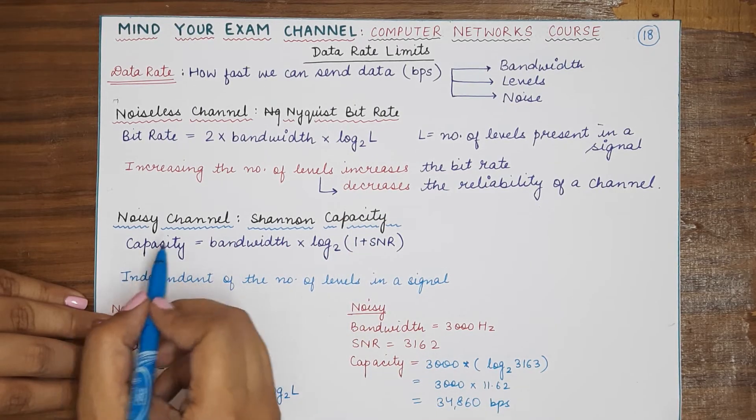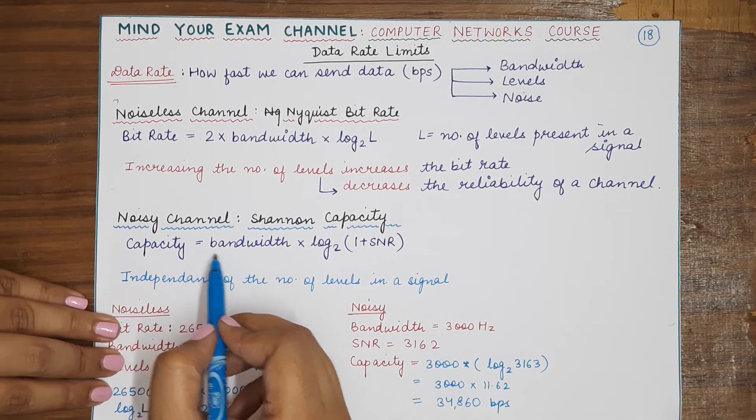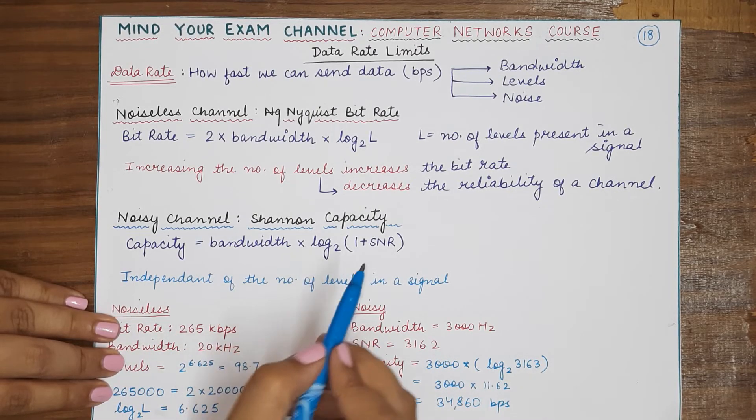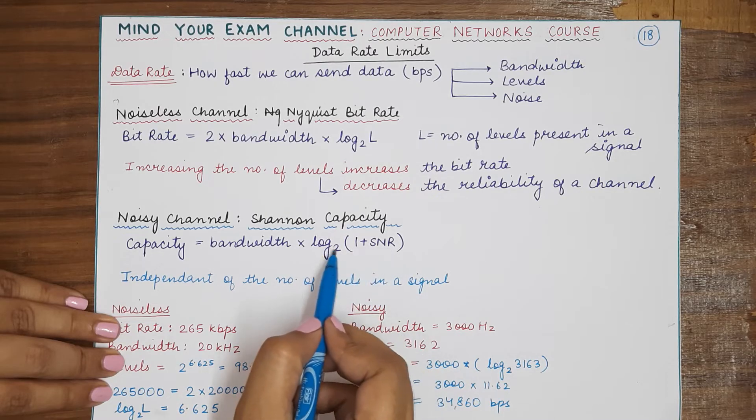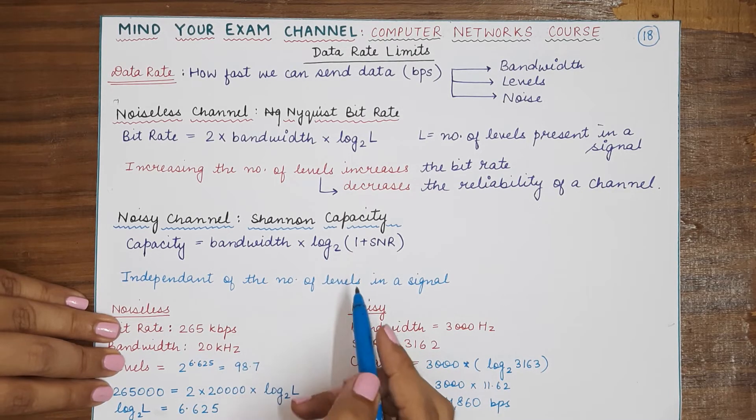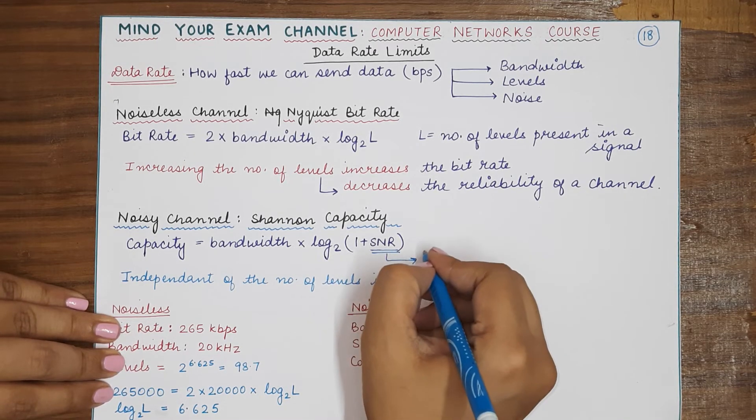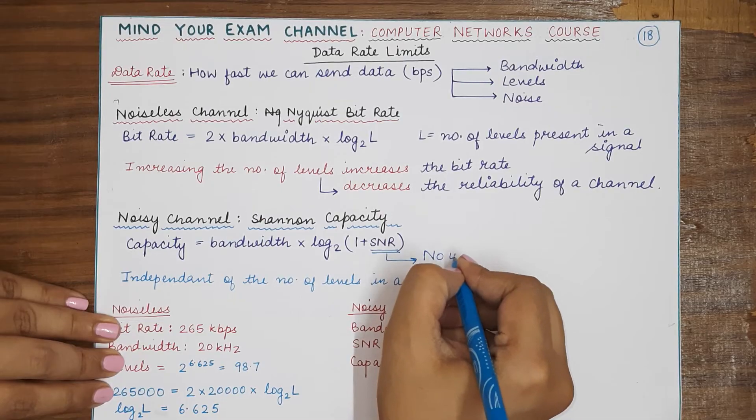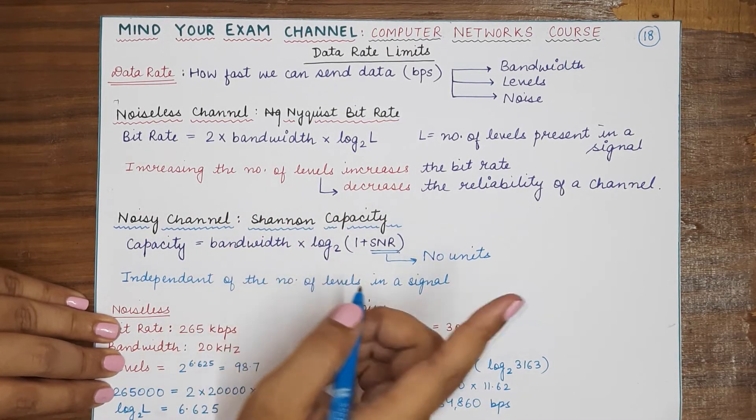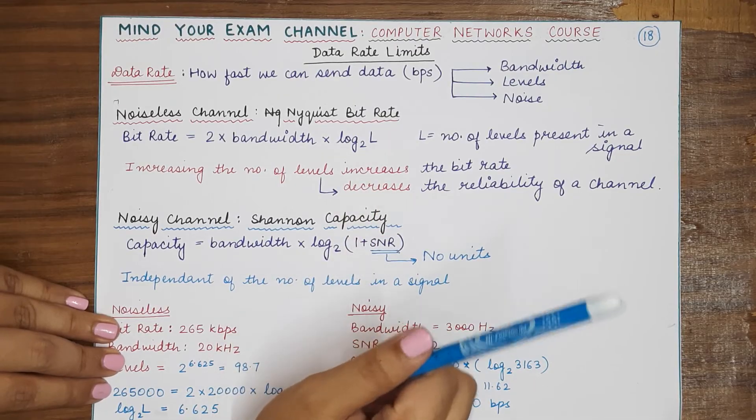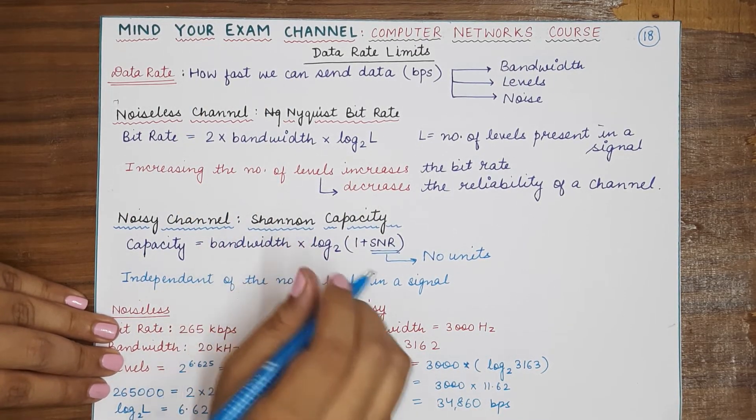Please remember, as I mentioned in the previous video also, this SNR has no units. So if in the question you are given SNR with decibel in the decimal form, you will have to apply the formula that we used in the previous video to convert the SNR from decibel to normal SNR without any units.